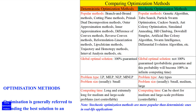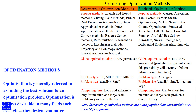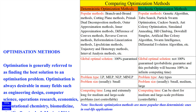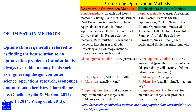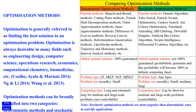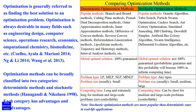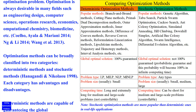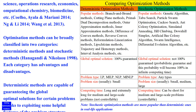Optimization is generally referred to as finding the best solution to an optimization problem. Optimization is always desirable in many fields such as engineering design, computer science, operations research, economics, computational chemistry, biomedicine, etc. Optimization methods can be broadly classified into two categories: deterministic methods and stochastic methods. Each category has advantages and disadvantages.